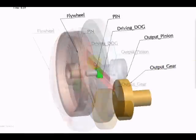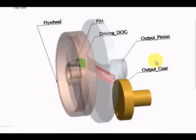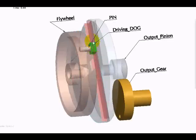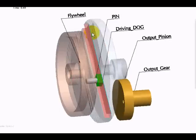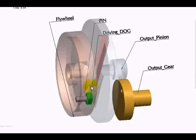As the flywheel is rotating, the green dog is sliding along the red surface as you see that. And then there is a sudden reversal at this point.